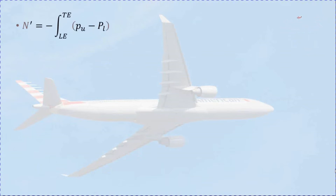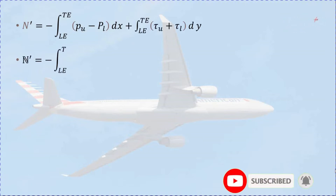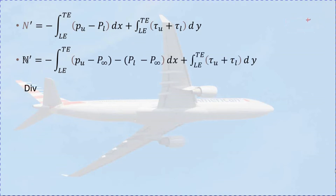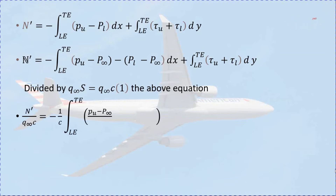Substituting into the equation, N prime equals minus the integral from leading edge to trailing edge of tau_U plus tau_L dy. Adding and subtracting the free-stream pressure P_infinity: N prime equals minus the integral from leading edge to trailing edge of (P_U minus P_infinity minus P_L minus P_infinity) dx, plus the integral from leading edge to trailing edge of tau_U plus tau_L dy. To find the coefficient of normal force, we divide both sides by q_infinity times the surface area.